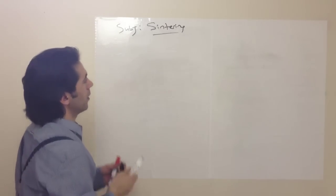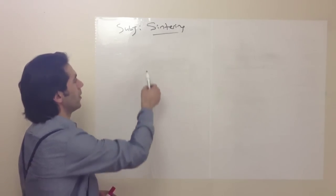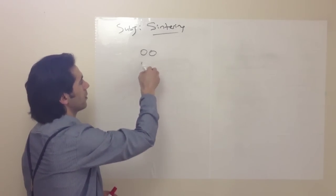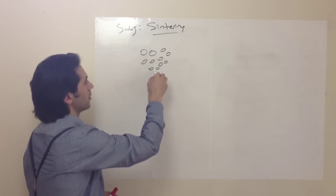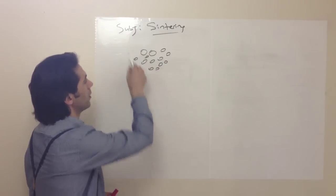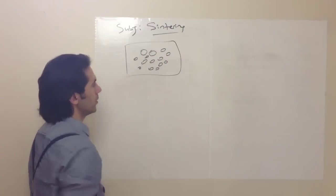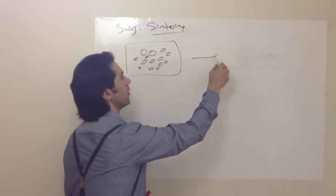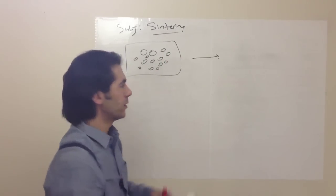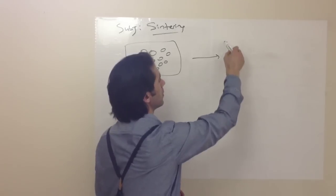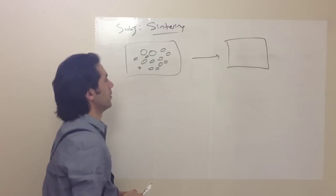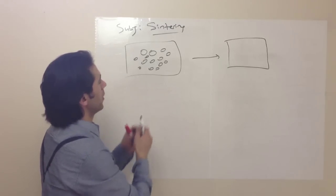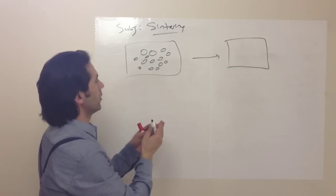Sintering, I can explain it like that. Powder materials and particles, you heat it below the melting point. In the particles, there occurs atomic diffusion.